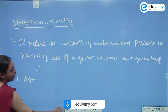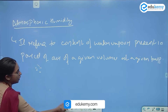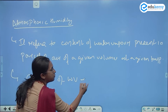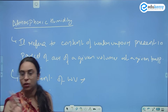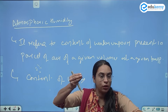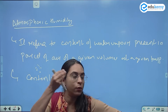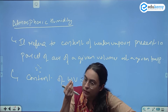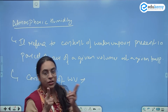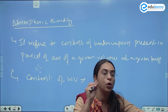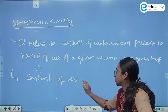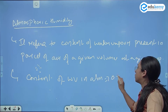Atmospheric humidity — basically, the content of water vapor. What is the content of water vapor in the total atmosphere? What is the percentage of water vapor? If you see the composition of the atmosphere, we have 78% nitrogen, 21% oxygen. So what is the content of water vapor? It ranges from 0 to 4%. The content of water vapor in the atmosphere ranges from 0 to 4%.